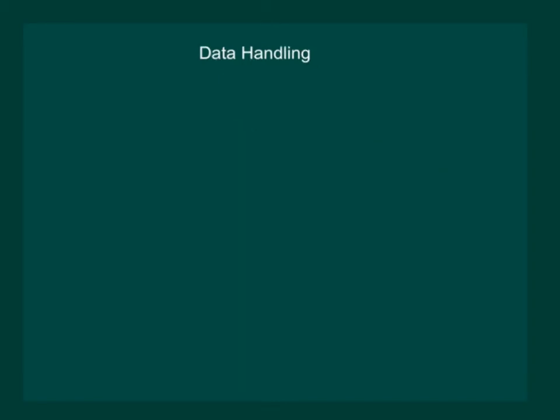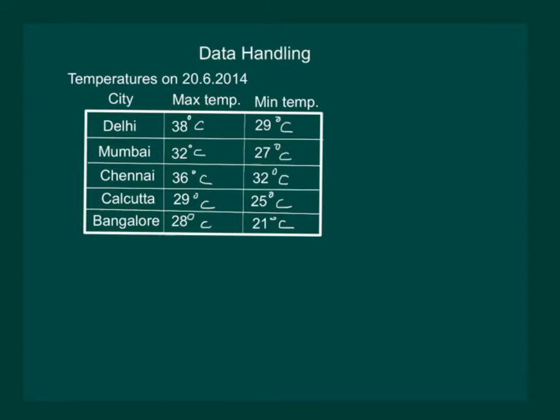We have seen several kinds of data through newspapers, magazines, television and other sources. We also know that data give us some sort of information. Let us look at some common forms of data. You must have come across temperature of cities on a particular day. Clearly we can see from the table that it gives us the maximum temperature and the minimum temperature on a particular day.